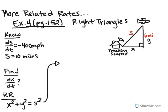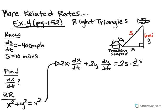The derivative of x squared is going to be 2x dx/dt, and I'm going to add that to 2y dy/dt, and that's going to be equal to 2s ds/dt.